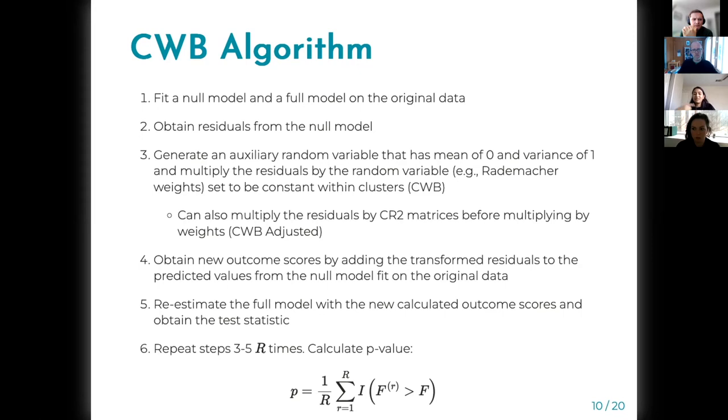You repeat these steps whatever bootstrap replication times that you want to run. And you calculate the p-value as the proportion of the test statistics that were greater than the original test statistics. It's F in this case because for multiple contrast hypothesis tests we use F-test.